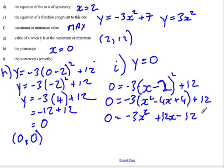So when we simplify all this, we end up with negative 3x squared plus 12x is equal to 0.